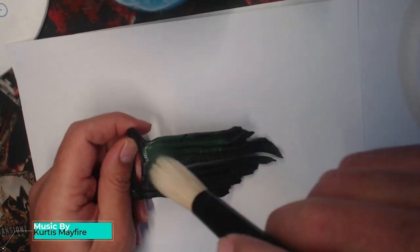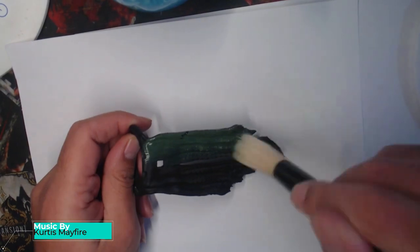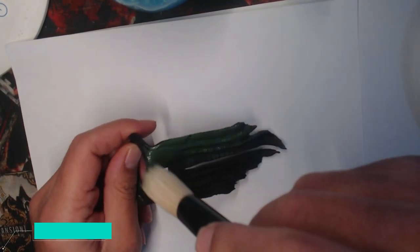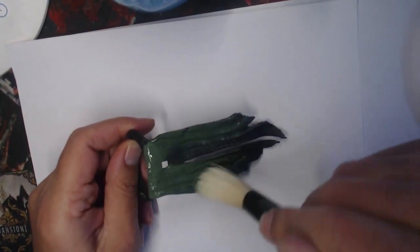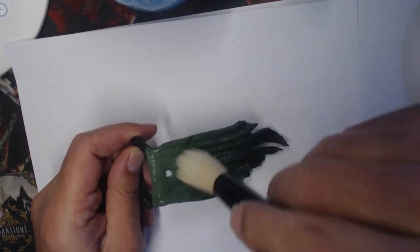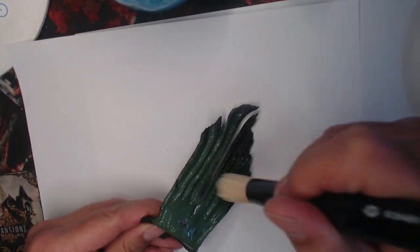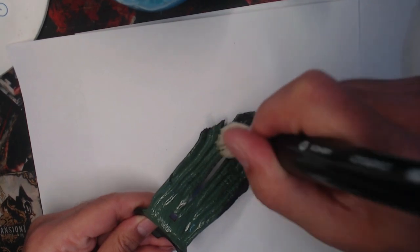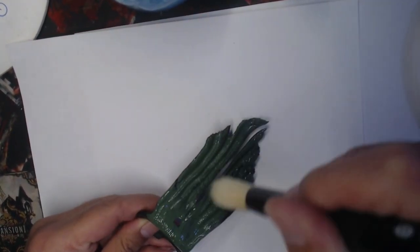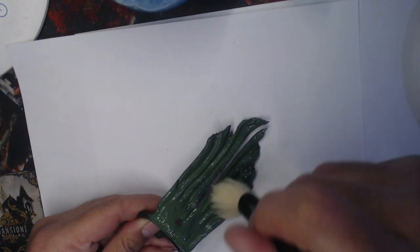When we last left off, I was getting ready to finish up the metallics, but I had realized there were some areas that I brain farted on, so let's go ahead and take care of those first. Starting with his waist cloth, since I wanted this to match his pants, I was going to follow the same methodology that I used for those.